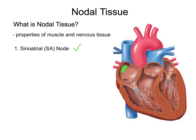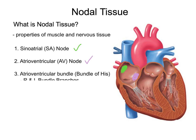The next nodal tissue is the atrioventricular node, which is also located in the right atrium. After the atrioventricular node comes the atrioventricular bundle, or the bundle of His. The atrioventricular bundle will branch into right and left bundle branches, which along with the atrioventricular bundle will travel through the interventricular septum and up the walls of the left and right ventricles.